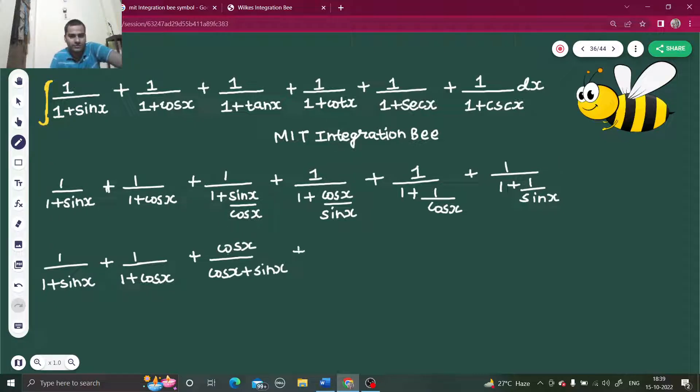Similarly, the next one will become sin x divided by sin x plus cos x. The next one will become cos x divided by cos x plus 1, and the next one will become sin x divided by sin x plus 1.